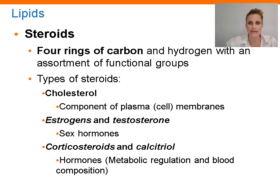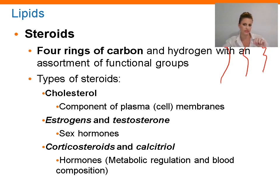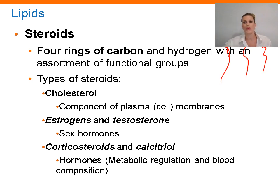A triglyceride is a glycerol head molecule that has fatty acid tails attached to it. How many fatty acid tails does a triglyceride have? Three — tri means three, like a tricycle has three wheels. So it's a glycerol with a non-lipid group and then three fatty acid tails. This is the way we store fatty acids. We can't link these chains directly to each other, so if we want to link them all together and store them away, we link them to this glycerol molecule — and that's how we store the fat.